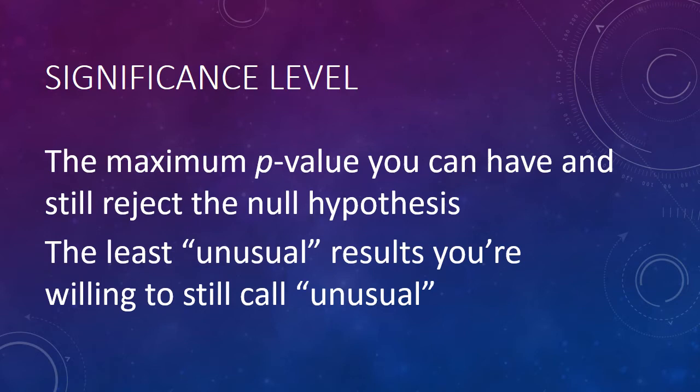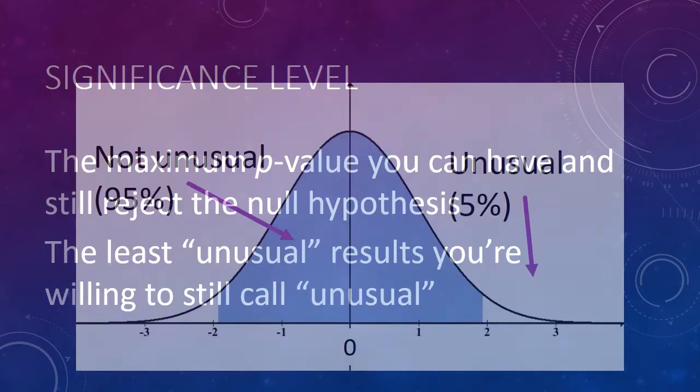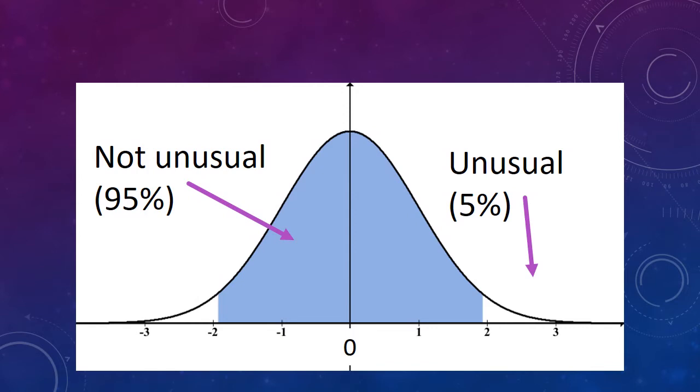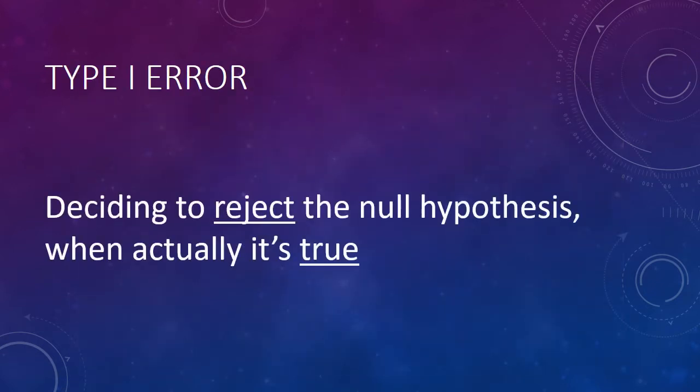But when the null hypothesis is actually true, we expect to get a p-value less than 0.05 about 5% of the time, just by random variation. But we always decide that the null hypothesis is false if the p-value is less than 0.05. This means that sometimes you'll make the wrong decision. It will look like the null hypothesis is false when actually it's true. This is one kind of mistake in statistical testing: thinking that the null hypothesis is false when really it's true. In statistics, we give this kind of error a name. It's a terrible name in my opinion, but it's the name people use. This is called Type I error.